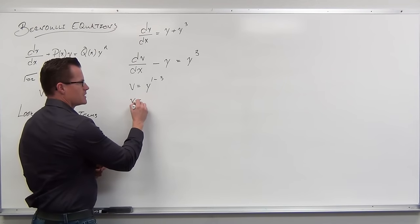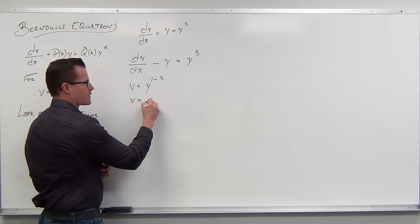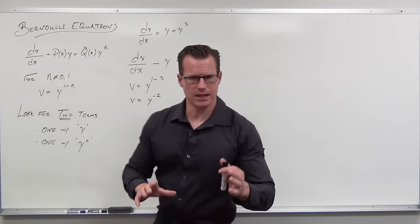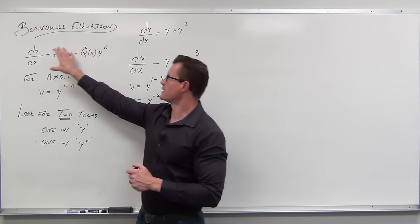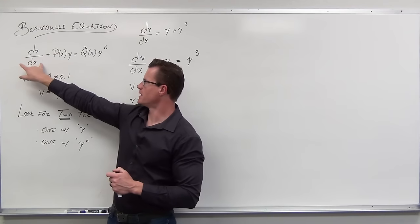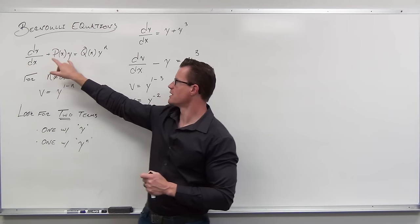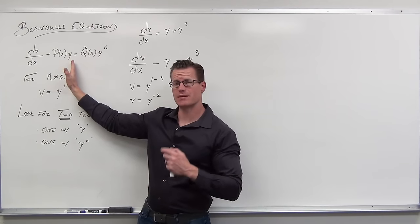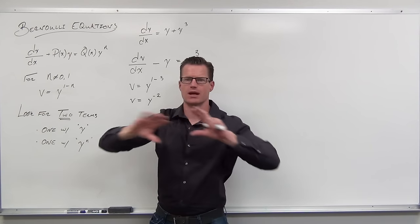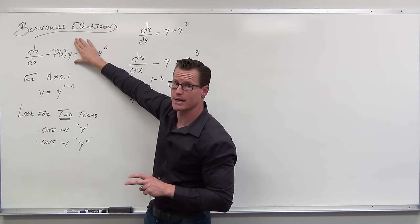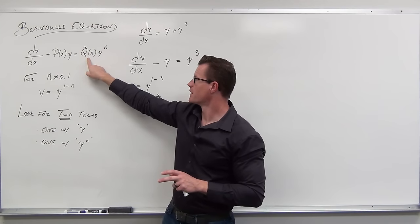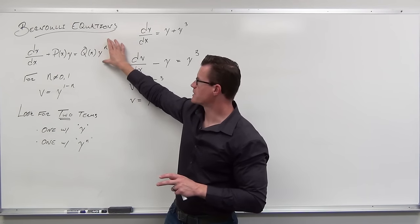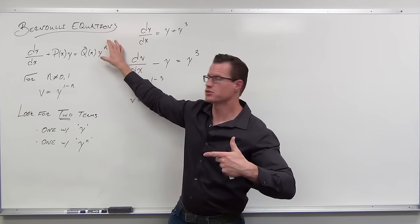The substitution is always v equals y to the one minus whatever the other power happens to be. In this case it's three, so v equals y to the one minus three. That's v equals y to the negative two power.